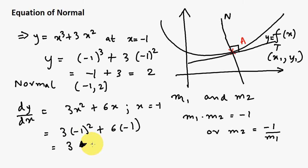And 3 times minus 1 squared is just 3 plus 6 into minus 6, we can write this as minus 6. 3 minus 6 equals minus 3. The slope of my tangent is minus 3 at the point minus 1, comma 2. But again, as I say, this is a normal.